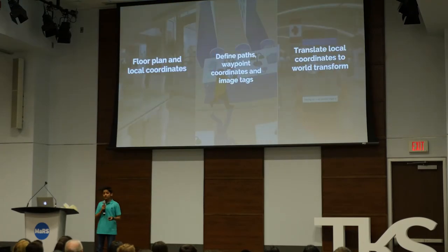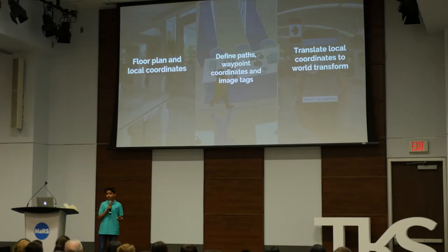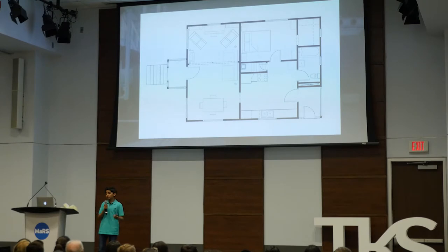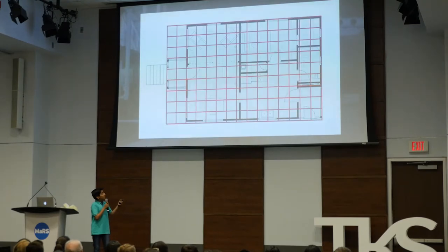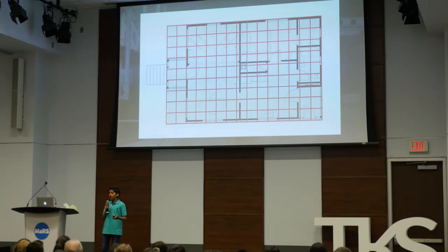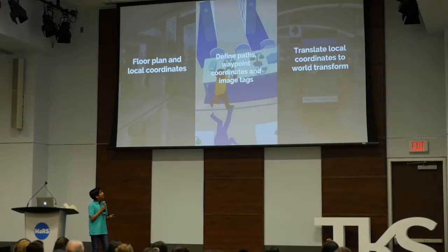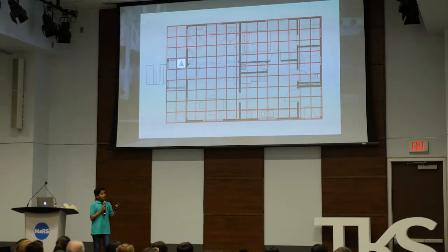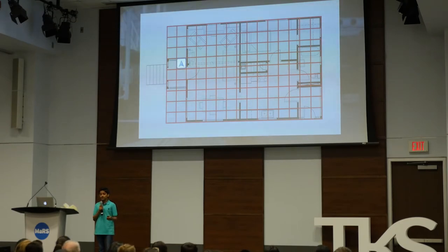There are three parts to this. The first part is to upload your floor plan and then build local coordinate grids within it. Whenever a user moves within the location, we're able to know where they are. We also need to define paths, waypoint targets, and image tags. The image tags are placed wherever we want to start the experience, and they can be placed throughout the indoor location.